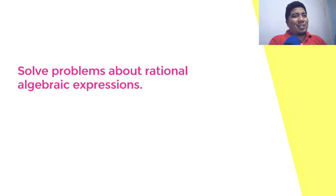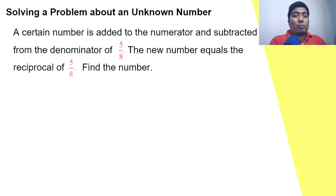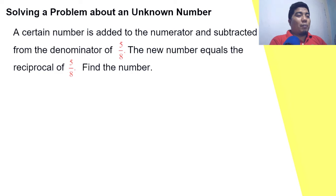The aim of our topic for today is to solve problems about rational algebraic expressions. Here is the first problem: a certain number is added to the numerator and subtracted from the denominator of five over eight. The new number equals the reciprocal of five over eight. Find the number.